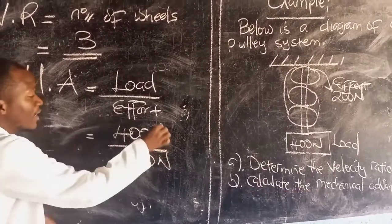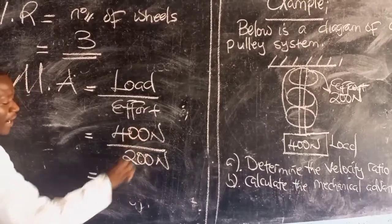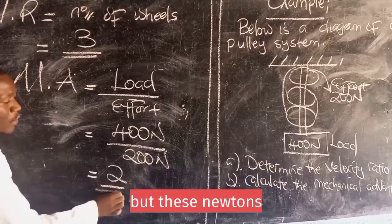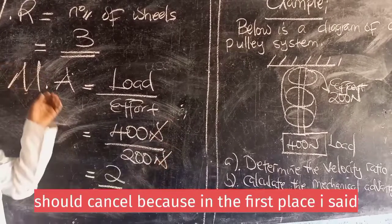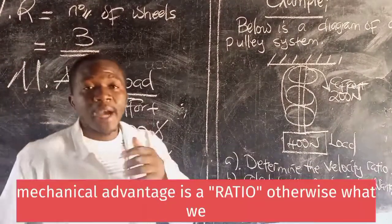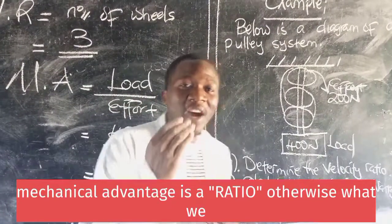In physics, to attract the marker's interest, we work with units. So, the effort is going to be 200 newtons. Then, I am going to say this is 400 over 200. We are going to get that as 2. But, these newtons should cancel because in the first place, I said mechanical advantage is a ratio.